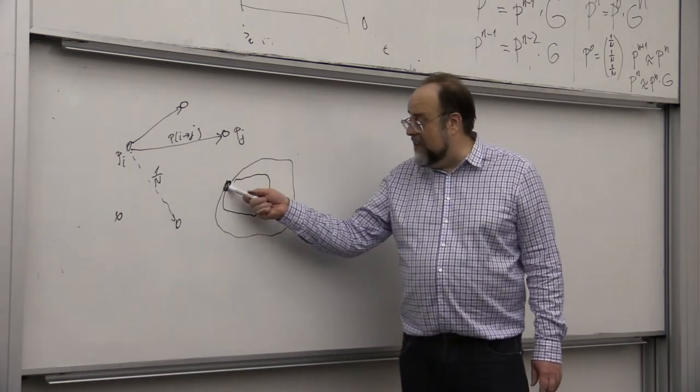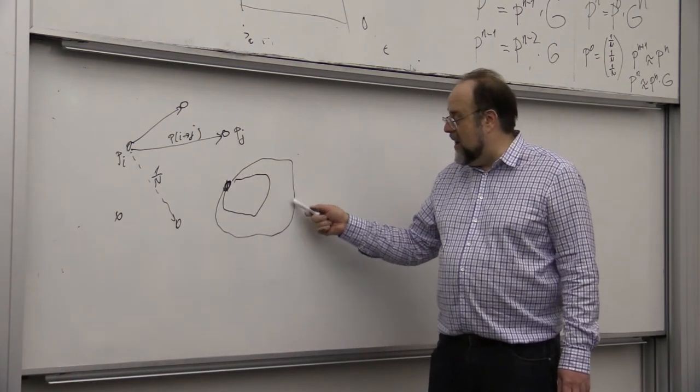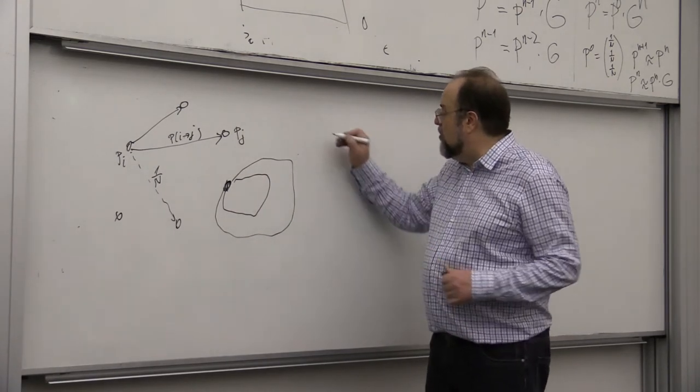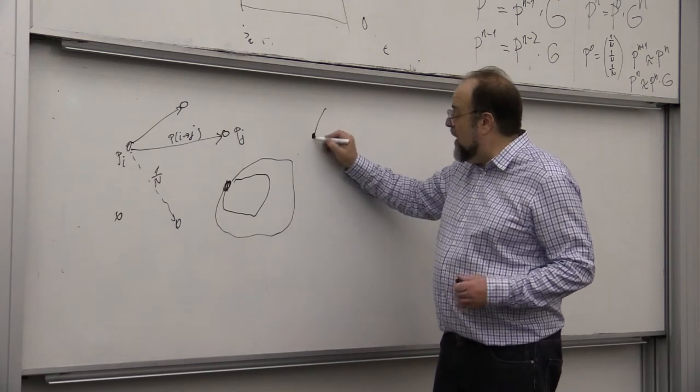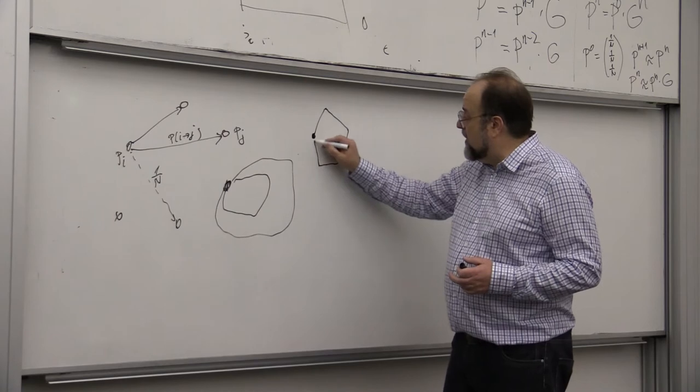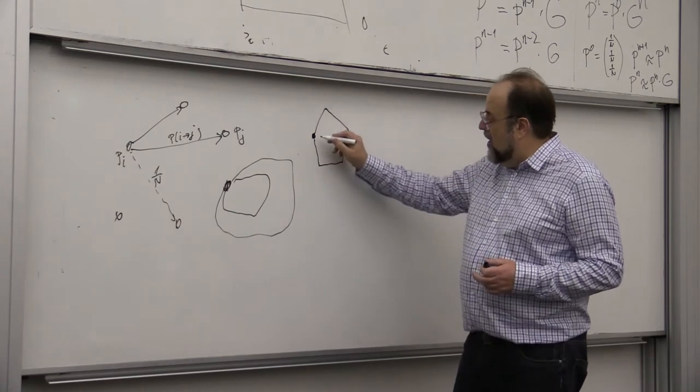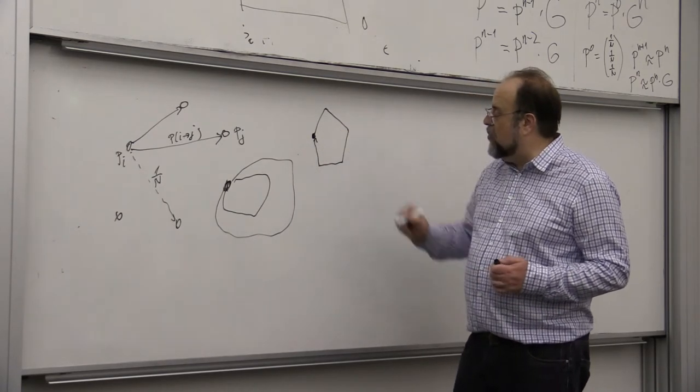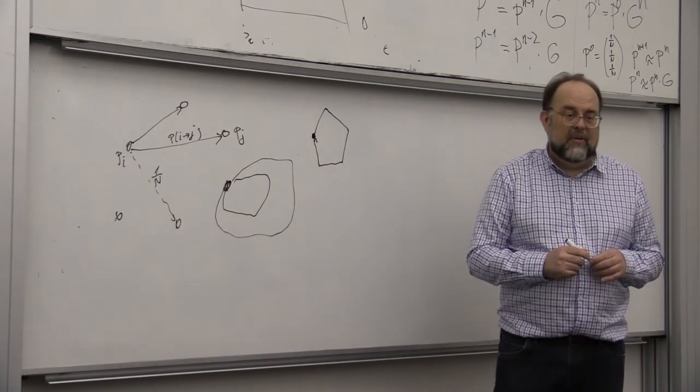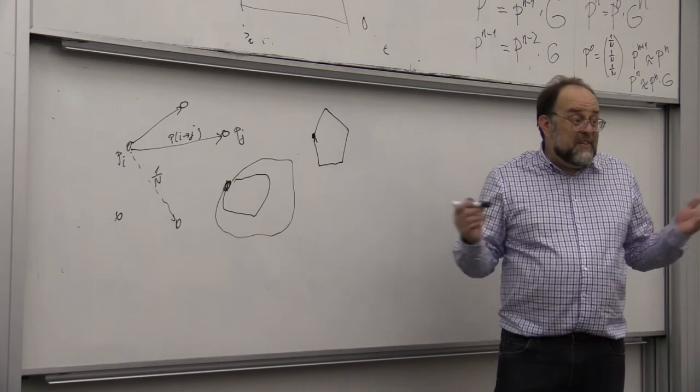Why is it the case that it's not the case that all paths, then why is it the case that there is no web page that has the property that any surfing that leads you back to that page must be divisible by some number, a fixed number? Because it's a complete graph. Exactly. It's a complete graph.